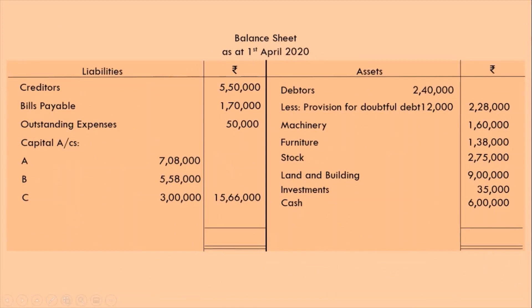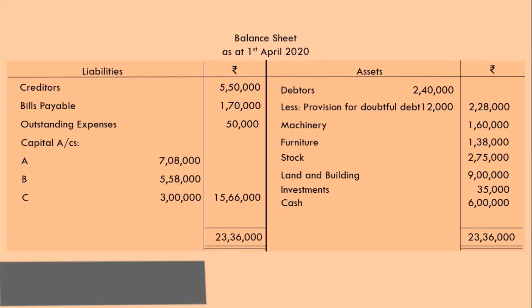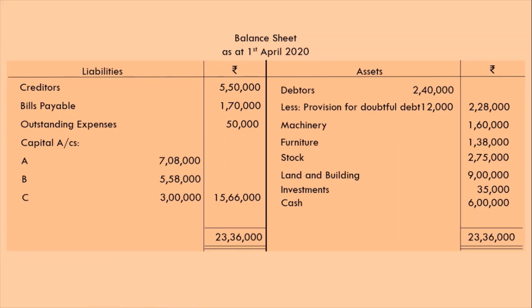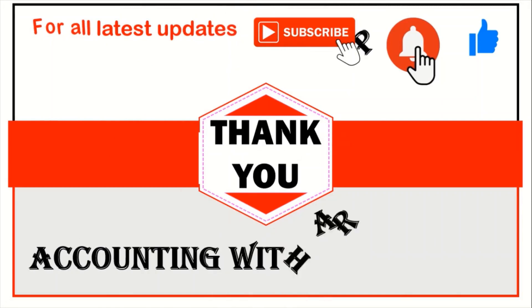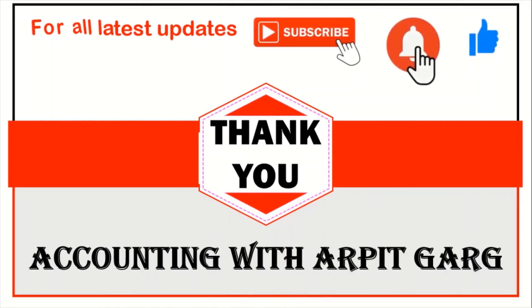Balance sheet is our last page. The only thing left is to total both sides. Adding all asset side amounts gives us Rs 23,36,000. And on the liability side, when we add all four amounts, we also get Rs 23,36,000. As both sides are equal — congratulations to all of us — our solution is absolutely correct! If you like the class, please like the video and subscribe the channel, hit the bell icon to receive all latest updates. Thank you, this is Accounting with Arpit Garg, signing off. Bye bye, take care, keep learning, stay safe, Jai Hind.